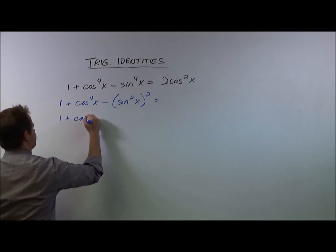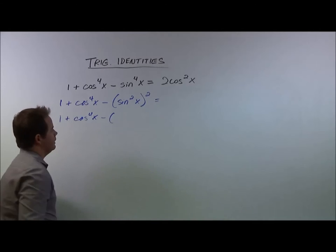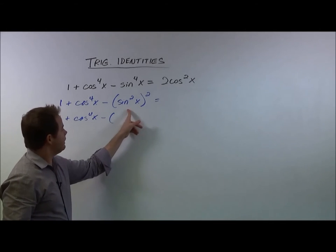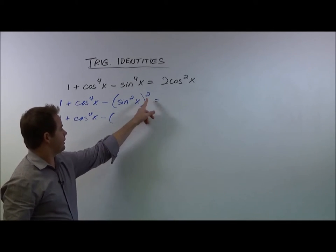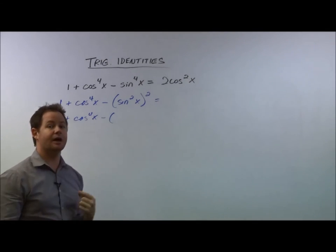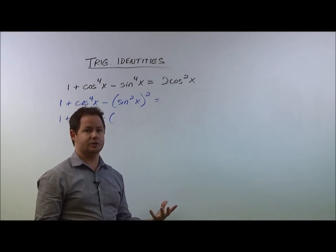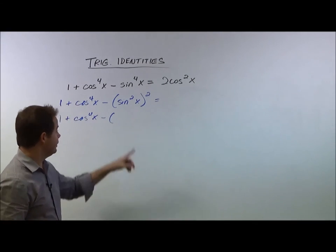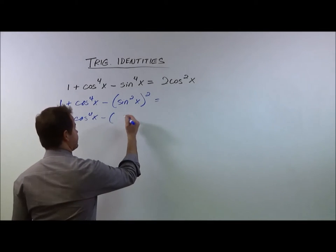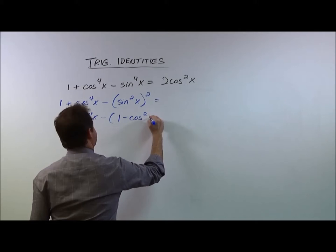1 plus cosine to the fourth of x minus. Now when we square sine squared of x, if we put this in terms of cosine, it's actually going to become a binomial. And if we use that Pythagorean identity of cosine squared plus sine squared equals 1, when we solve for sine squared, we get that sine squared is equal to 1 minus cosine squared of x.